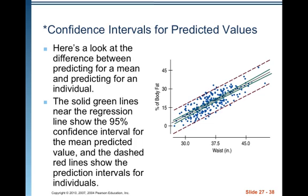Here's a look at the difference between predicting for a mean and predicting for an individual. The solid green lines near the regression line show the 95% confidence interval for the mean predicted value — see how close and narrow that is no matter where you go. The dashed red lines show the prediction intervals for individuals. For a 30-inch waist, the lower and upper bounds of the prediction interval are very wide because that's for individuals. For the mean response, the confidence interval from green line to green line at a 30-inch waist is much more narrow.